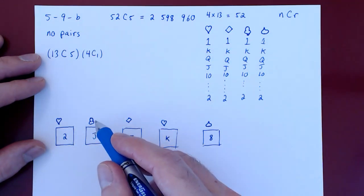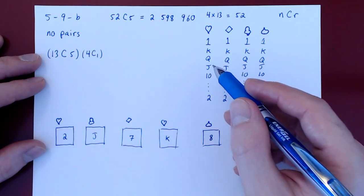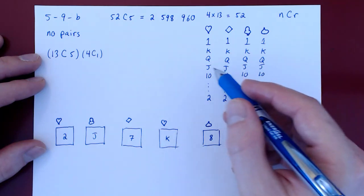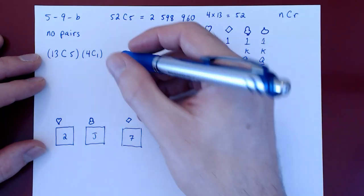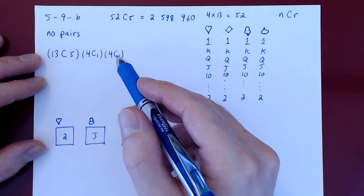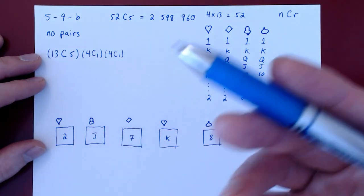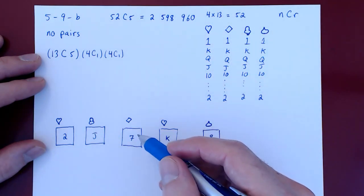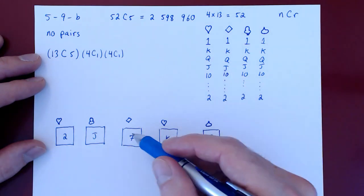You have to choose the suit of the second card. The same argument. How many ways can we choose a jack from four jacks? There are four possibilities. Now we've chosen the suit for the second card. We have to choose the suit of the third card. How many sevens can we choose from? There are four possibilities for the seven.